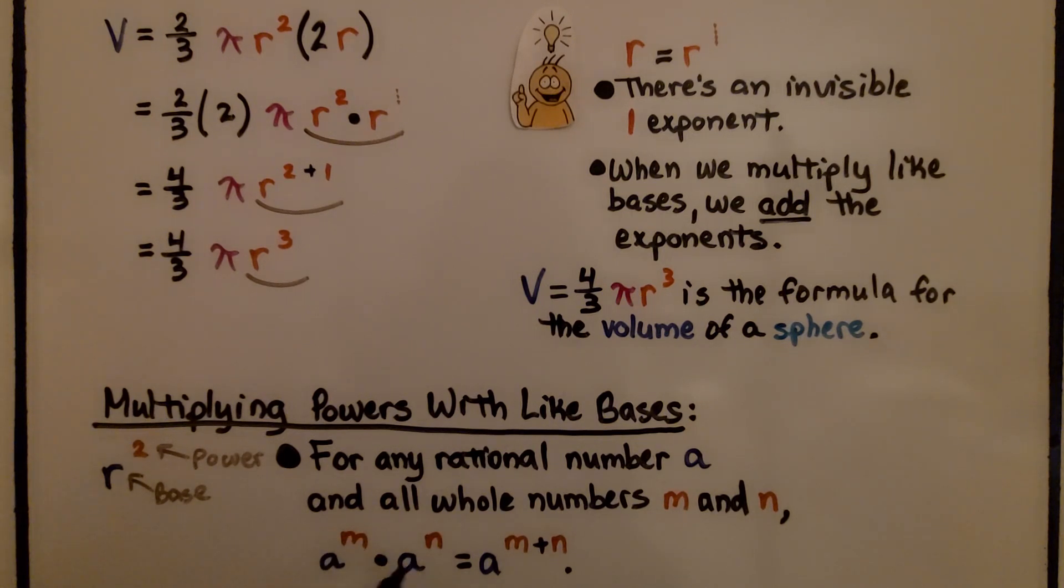When we're multiplying bases that are alike, we add the exponents. So we would have a to the m plus n. So r to the second power times r to that invisible first power would be r to the two plus one, or r to the third power.